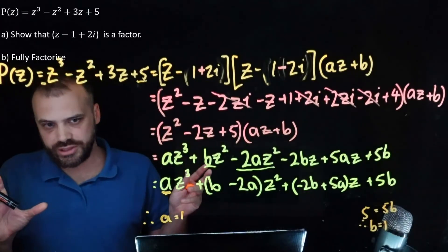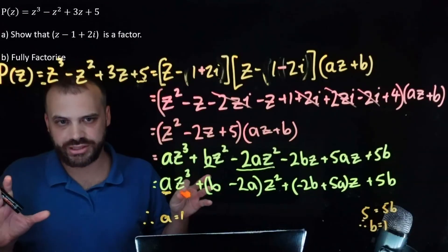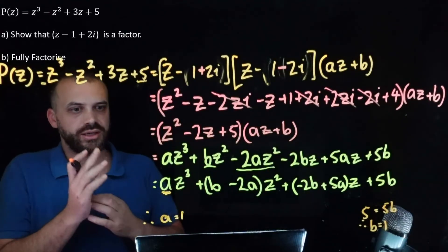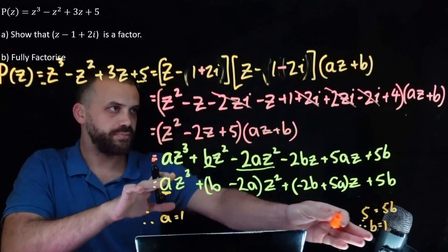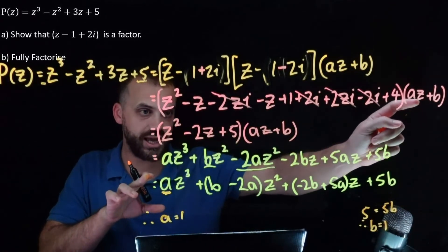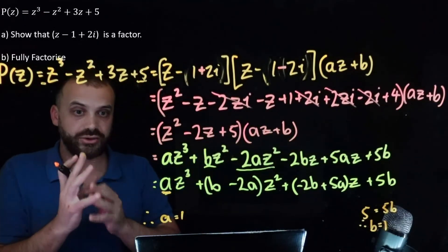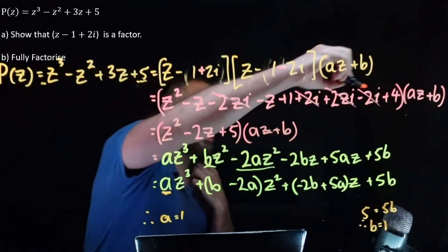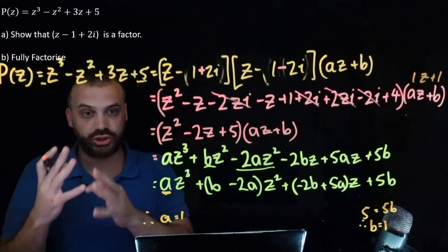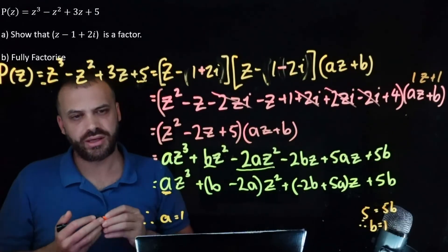A little bit of a coincidence here — a is equal to 1, b is equal to 1. Not always the case. So if a equals 1 and b equals 1, then this az plus b factor — we now know what it is: 1z plus 1, or just z plus 1.